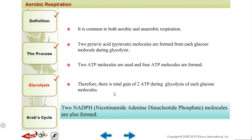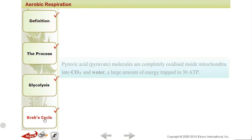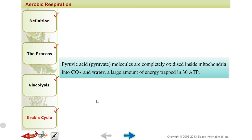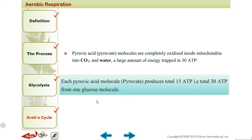Besides ATP, another energy carrier is NADPH — nicotinamide adenine dinucleotide phosphate — and 2 NADPH molecules are formed. These contribute to the total of 38 ATP molecules formed in aerobic respiration. Then pyruvate is completely oxidized to CO2 and water, trapping a large amount of energy: 30 ATP molecules are formed from pyruvate — 15 ATP per pyruvate molecule, so 15 plus 15 equals 30.